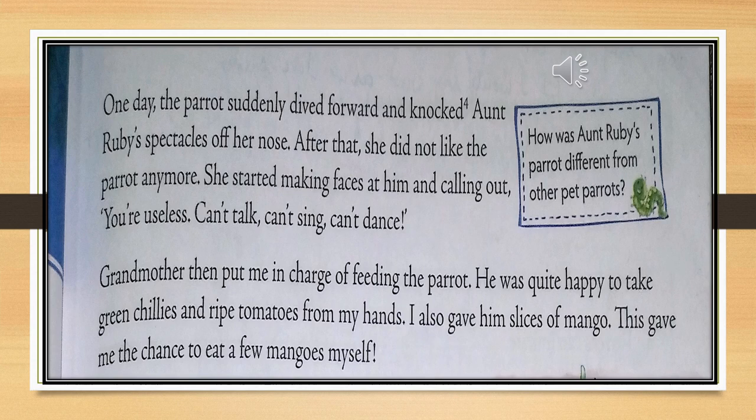Because she started disliking the parrot, grandmother put the narrator in charge of feeding the parrot. As it was a caged bird, it needs to be fed — it can't fly and find food on its own. The narrator used to feed him, and the parrot really liked to eat green chillies and ripe tomatoes. Sometimes the narrator used to give him slices of mango also, and while feeding him mangoes, the narrator himself was also enjoying a few slices.